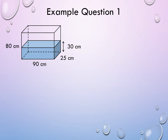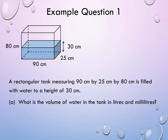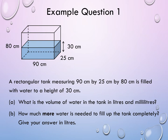Let's look at example question 1. A rectangular tank measuring 90 centimeters by 25 centimeters by 80 centimeters is filled with water to a height of 30 centimeters. Part A: What is the volume of water in the tank, in liters and milliliters? Part B: How much more water is needed to fill up the tank completely? Give your answer in liters.